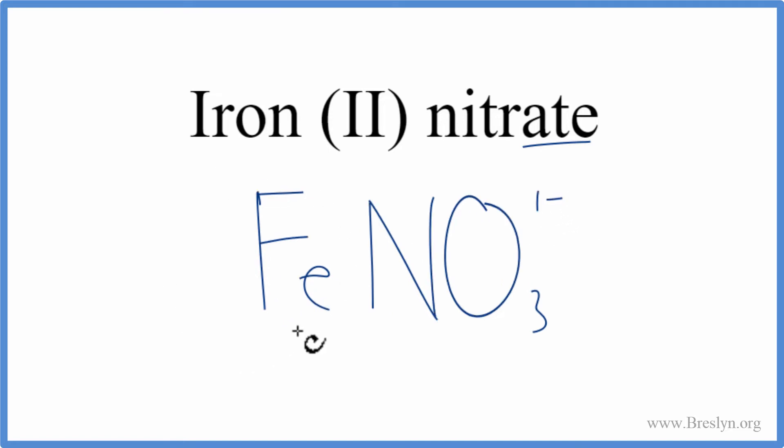Since iron's a metal, it's a transition metal, and then the nitrate ion, that's a group of non-metals, we have an ionic compound.